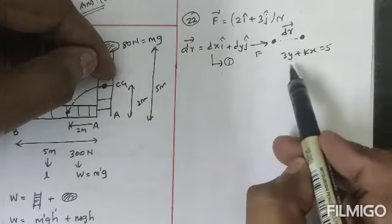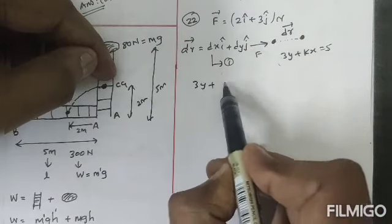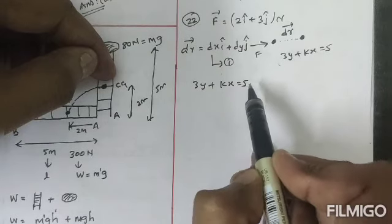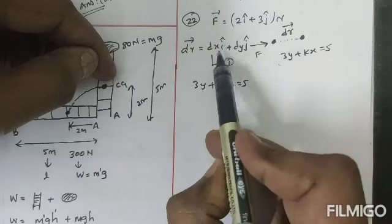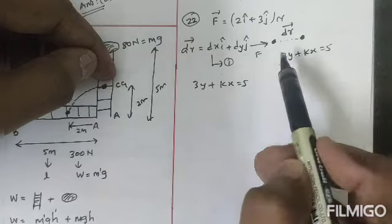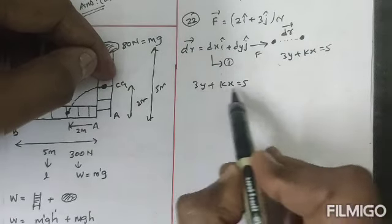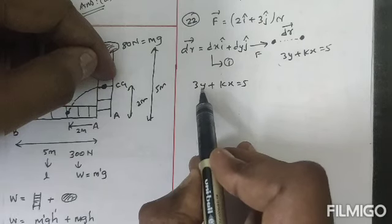Now let's take this equation: 3y plus kx is equal to 5. From this equation I am going to find dx or dy value. I am going to find the dy value first, so we want to differentiate this equation. UV method: this is u, this is v.